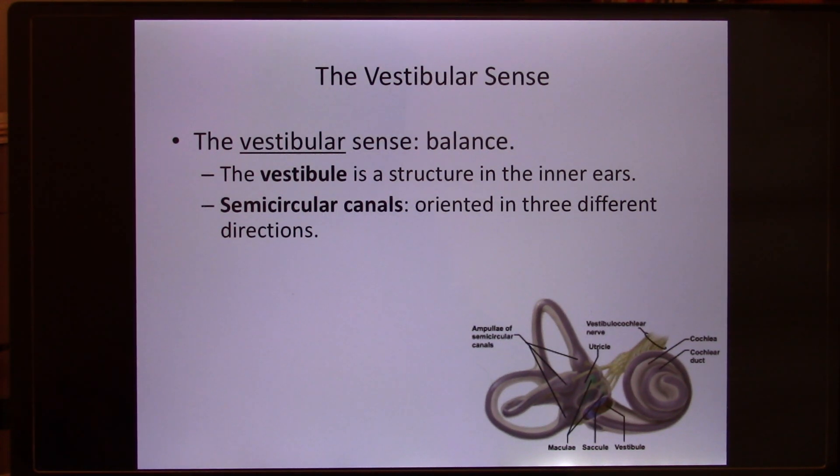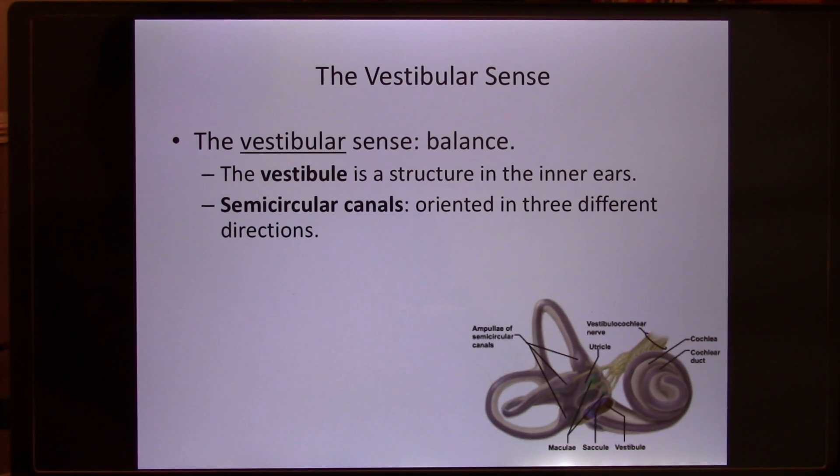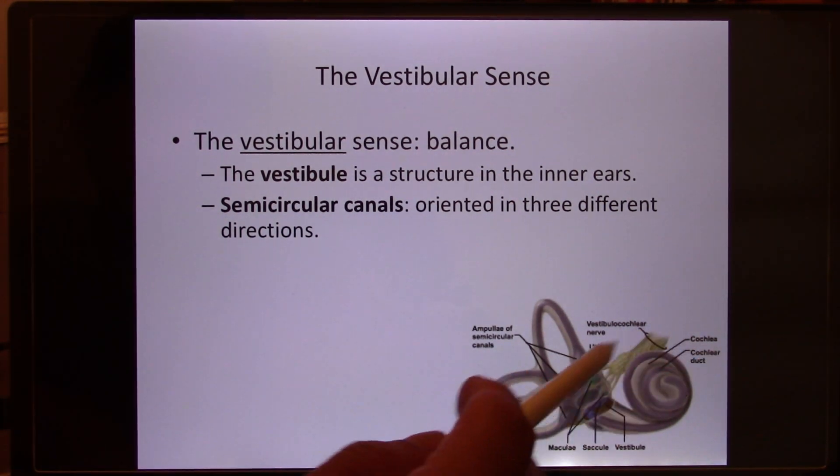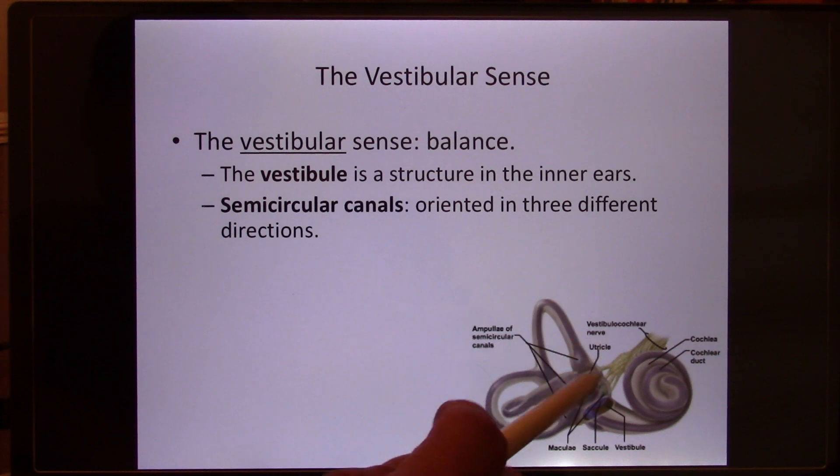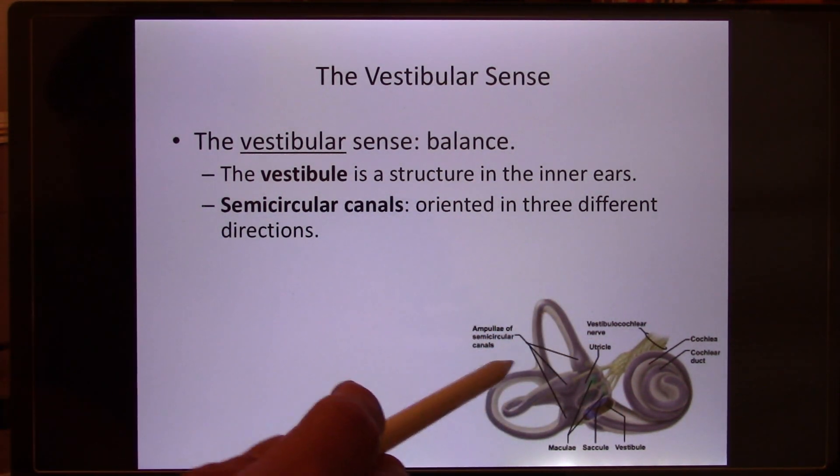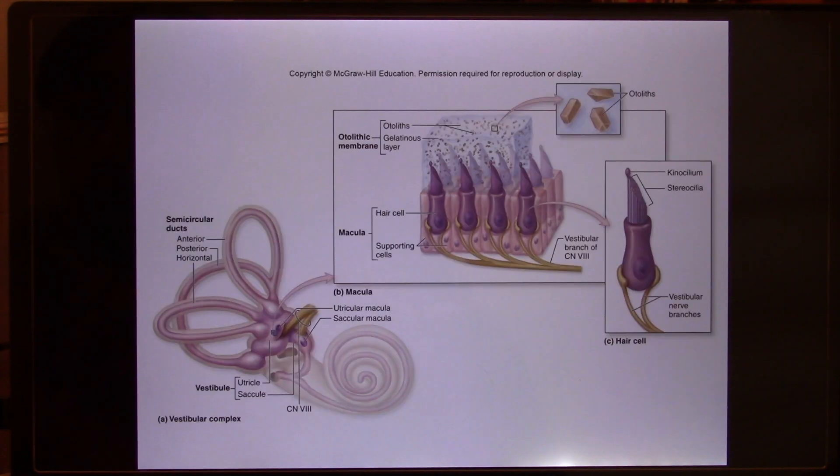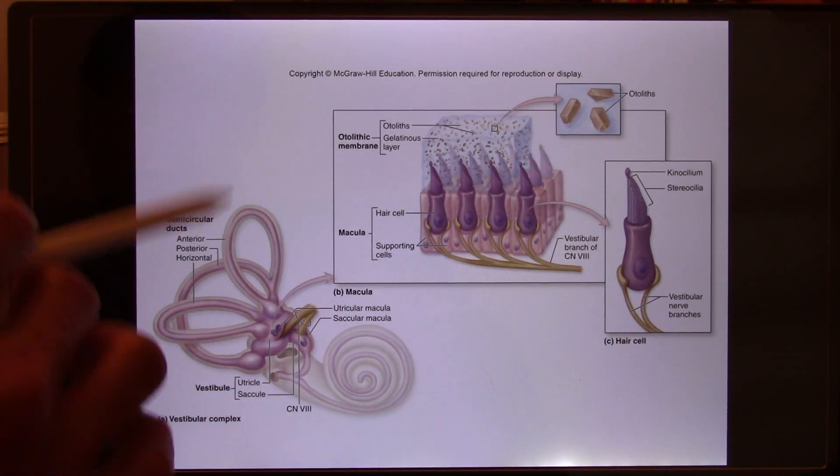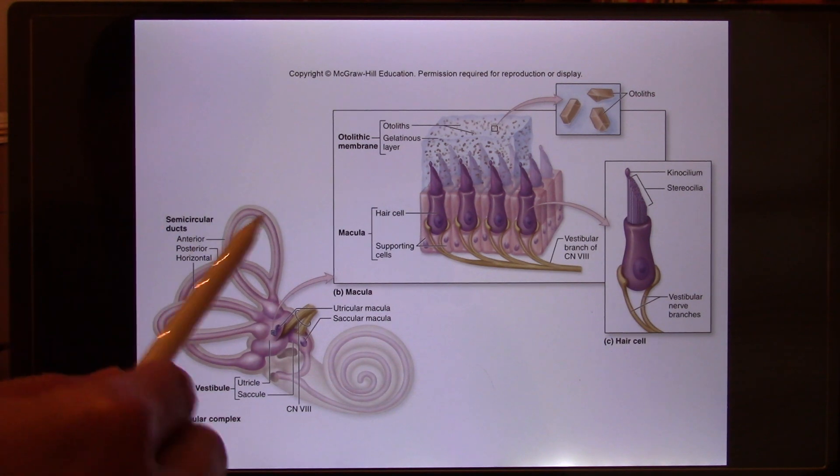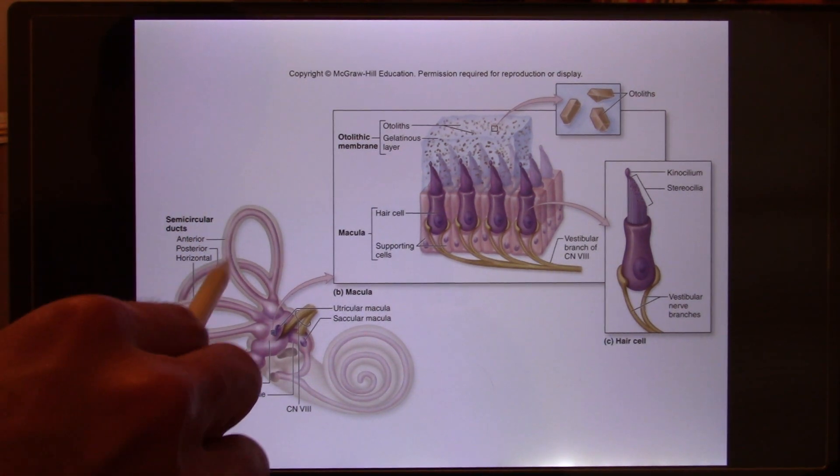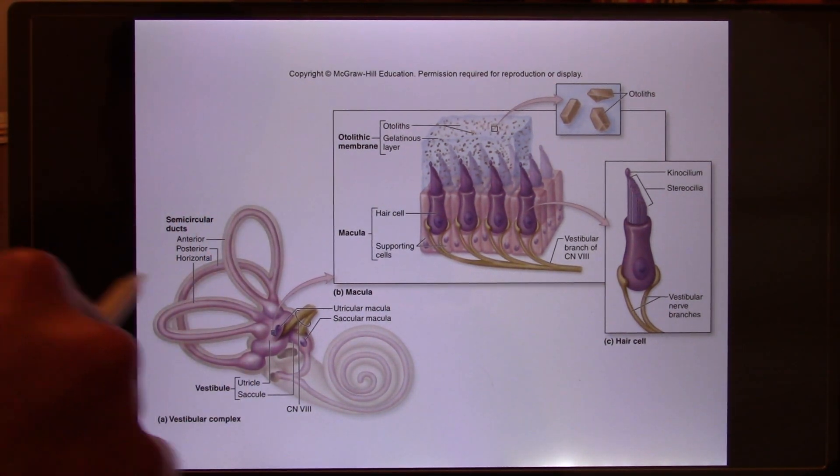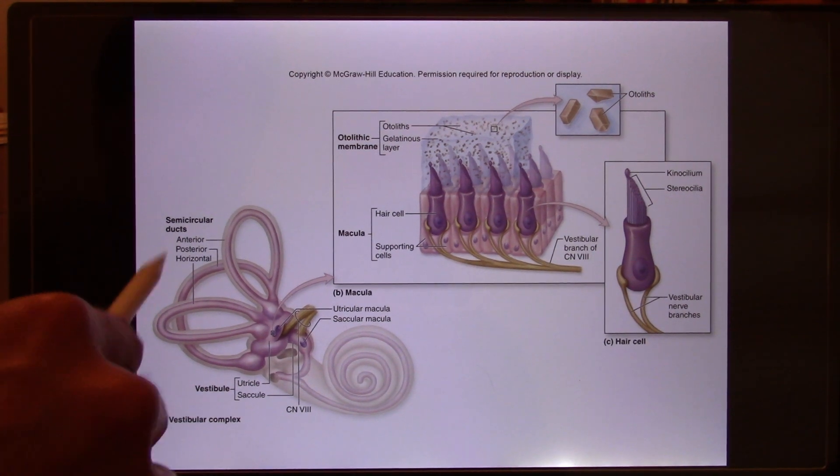In your inner ear, you have another system called the vestibular sense. This sense is for balancing. So in your inner ear, 50% part cochlear, that's for auditory. The other 50% is for balancing. The semicircular canal, there's three tubes. These three tubes are like in the X, Y, and Z direction. So no matter which direction your ear moves, you're going to vibrate them.